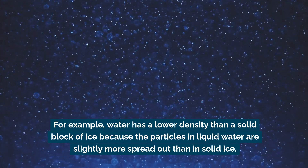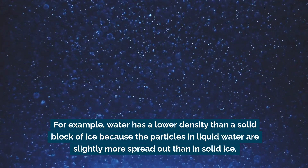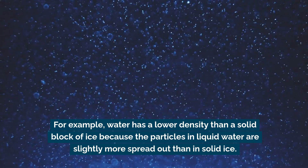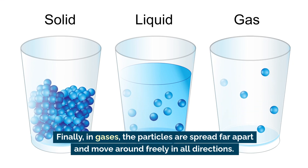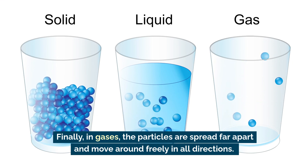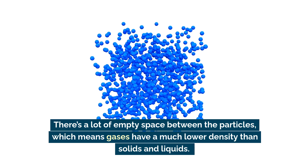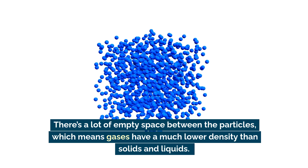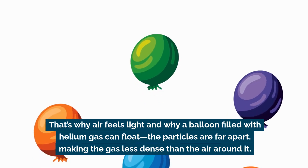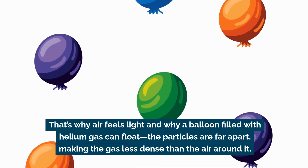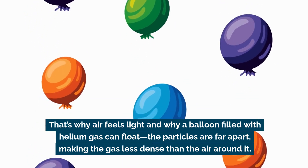For example, water has a lower density than a solid block of ice because the particles in liquid water are slightly more spread out than in solid ice. Finally, in gases, the particles are spread far apart and move around freely in all directions. There's a lot of empty space between the particles, which means gases have a much lower density than solids and liquids. That's why air feels light and why a balloon filled with helium gas can float — the particles are far apart, making the gas less dense than the air around it.